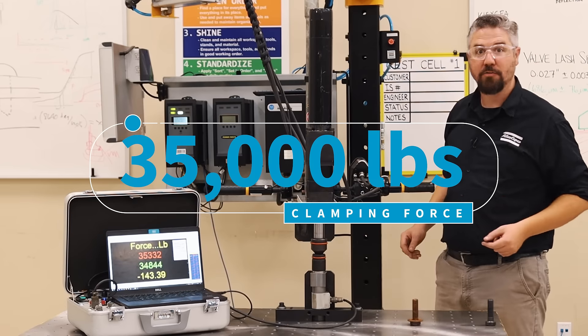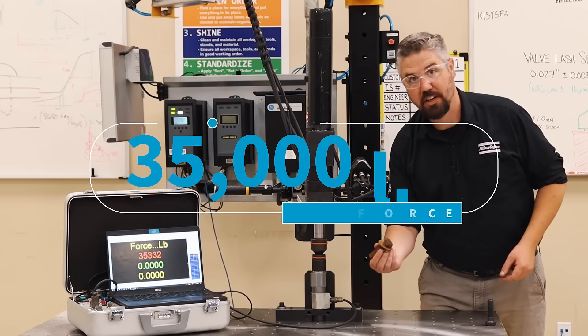Alright, 35,000 pounds of clamping force. Let's see what happens when we tighten a rusty bolt.